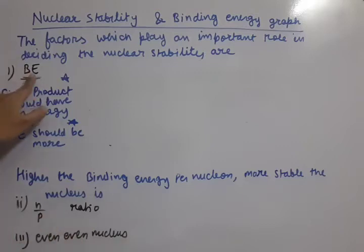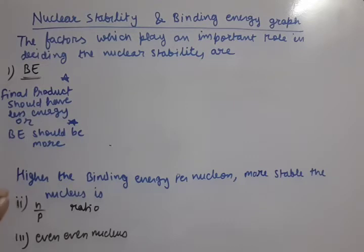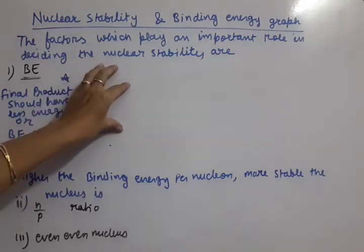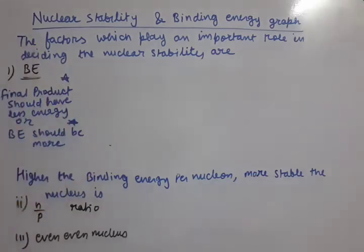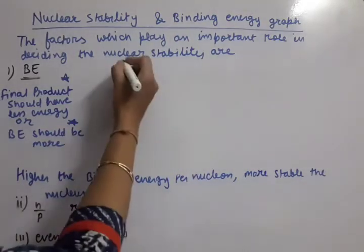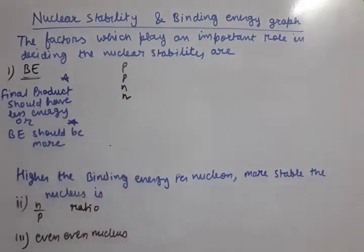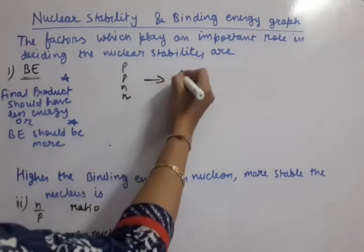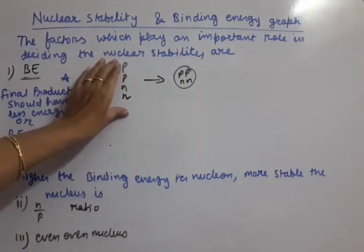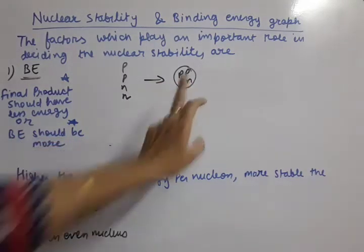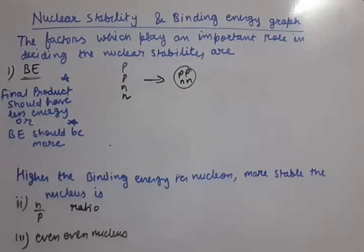Let us discuss the first factor: binding energy. Binding energy is the energy released when a number of nucleons — protons and neutrons — come together to make a nucleus. Suppose a number of protons and neutrons, which were earlier separated or scattered, are now sitting together inside the nucleus. Any process takes place when the final product is more stable, and it will be more stable when its final mass is less than the initial mass.